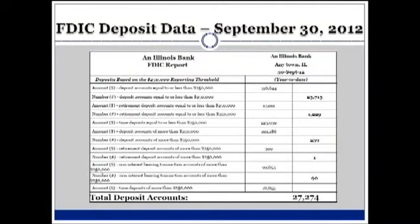You want to make sure that your insurance program not only makes you whole in terms of what you've lost, but you need to make sure it's going to defend you and not just pay your claim. The latest survey results indicate $214 is the average direct cost per record after a breach. We have a client that has 27,274 deposit accounts. If they have a breach and the average cost is $214 per record, what does that come to? $5.8 million, $6 million — wow.